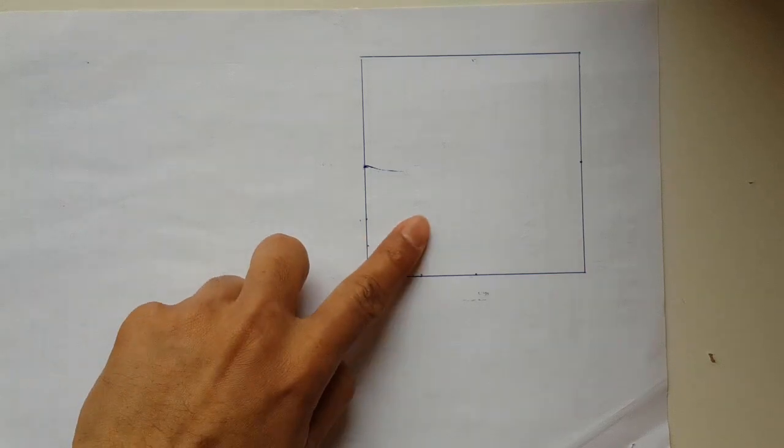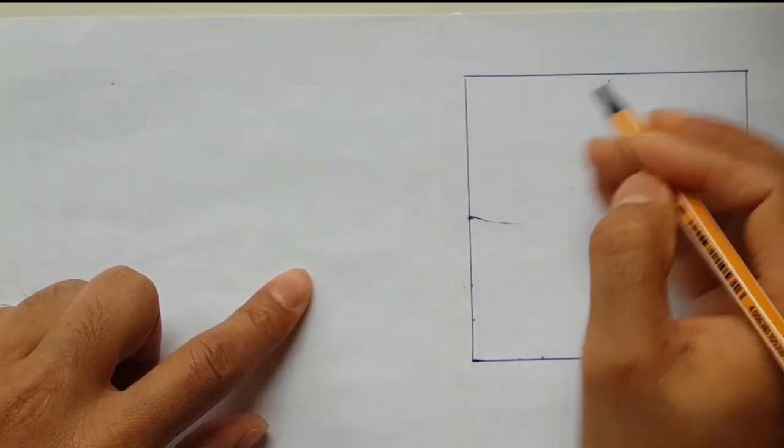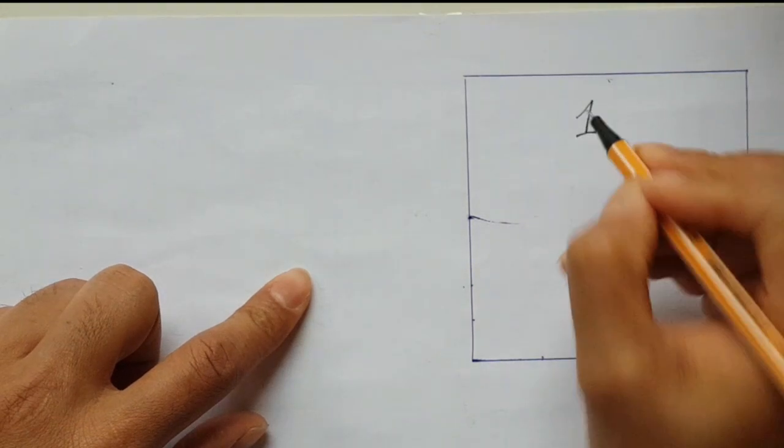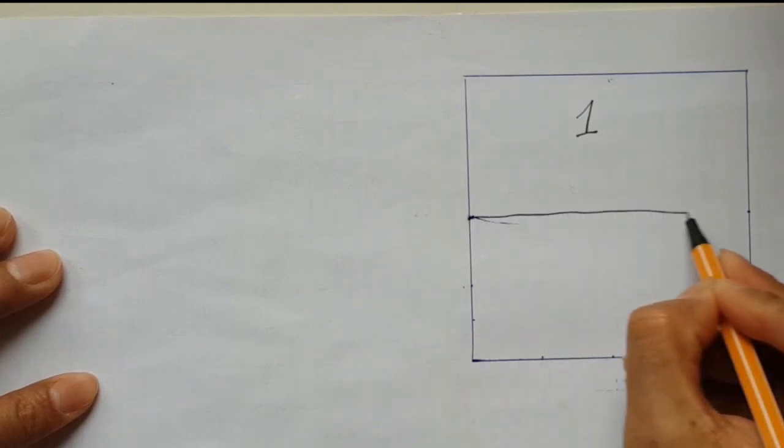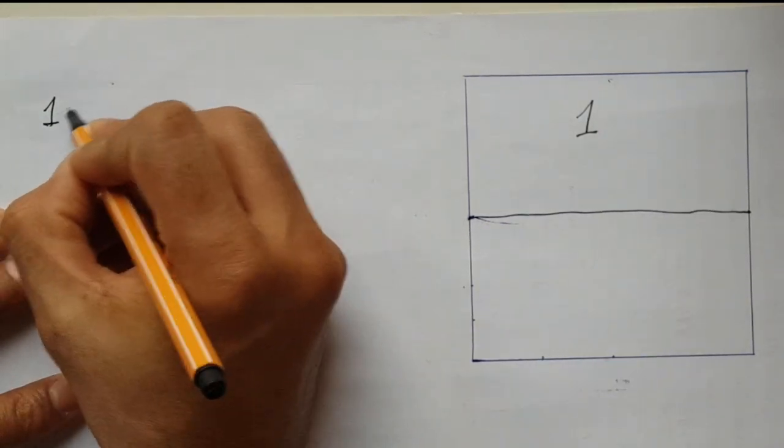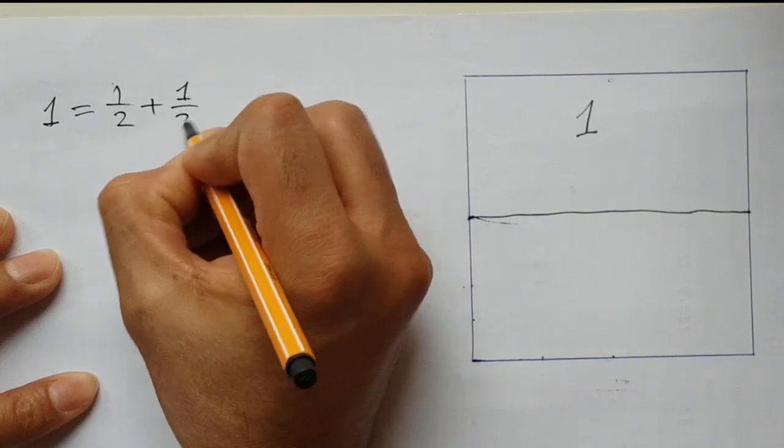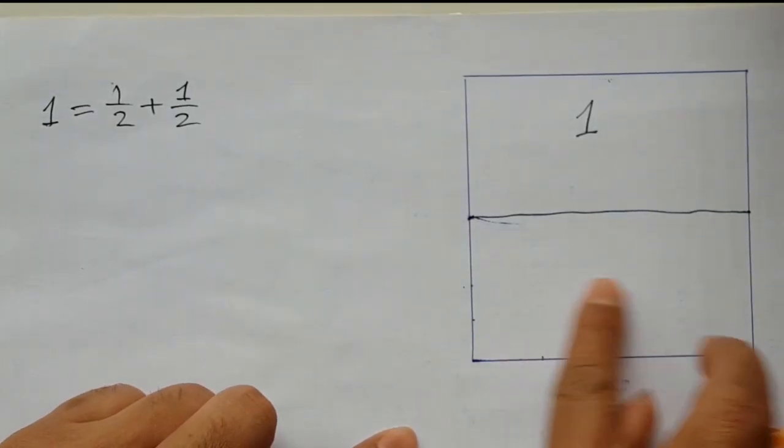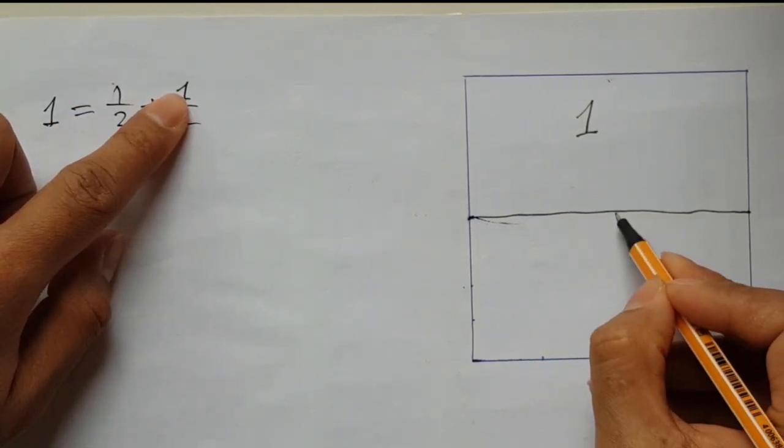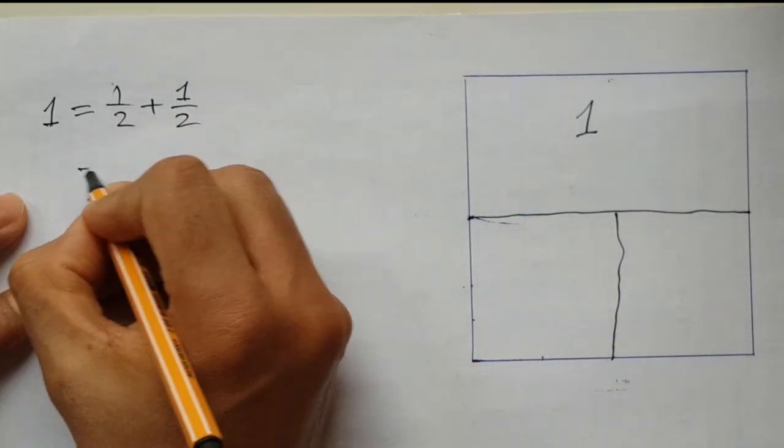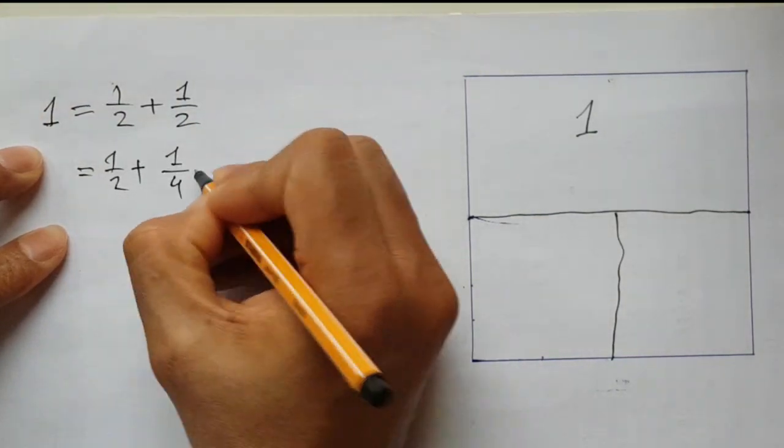First, let me draw a square shape and consider this entire surface volume is equivalent to one. One - make it halfway, so we can write 1 = 1/2 + 1/2. This half can be equally divided again. We can write this half as 1/4 + 1/4.